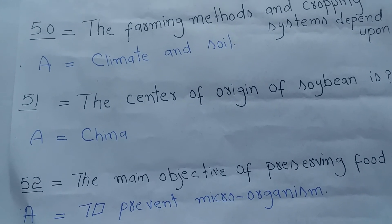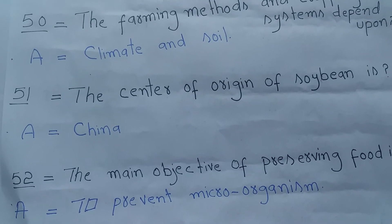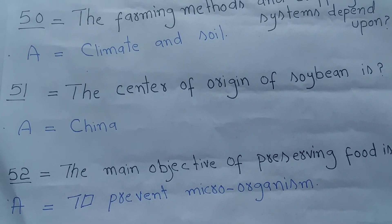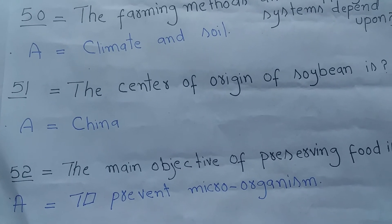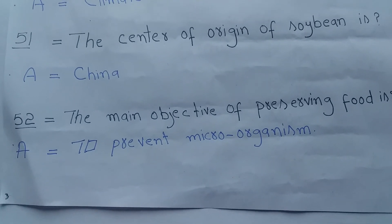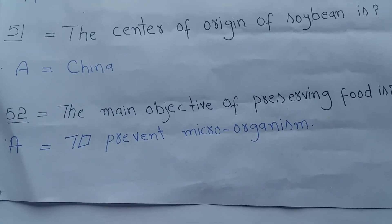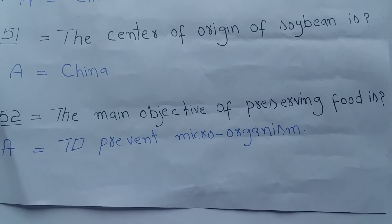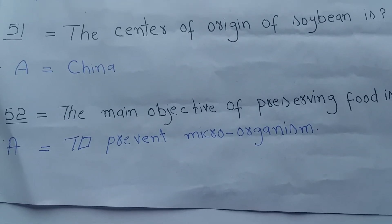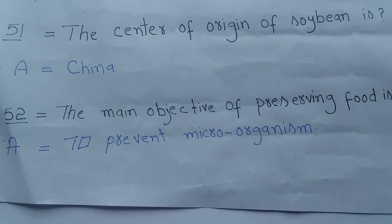Question number 51: The center of origin of Soybean is? Answer is China. Question number 52: The main objective of preserving food is? Answer is to prevent microorganisms.